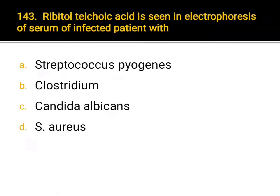Ribitol teichoic acid is seen in electrophoresis of serum of infected patient with: A. Streptococcus pyogenes, B. Clostridium, C. Candida albicans, D. S. aureus. Correct answer: D. S. aureus.